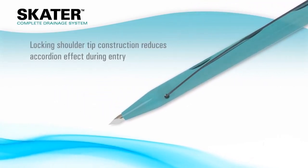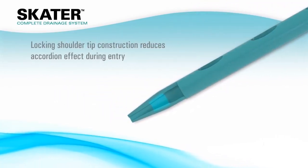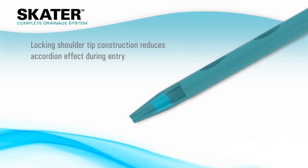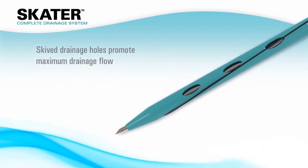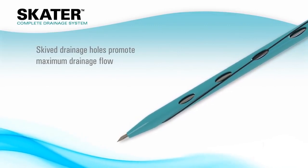First, the locking shoulder tip construction reduces the potential accordion effect during entry while allowing for large skived drainage holes to promote maximum flow.